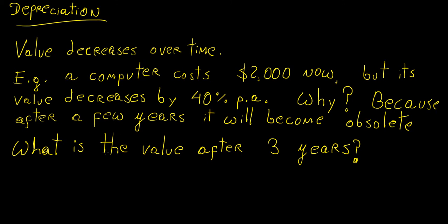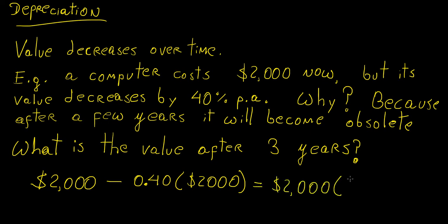So in this particular case, what would be the value after three years? So this is going to be something very similar to compound interest. But instead of adding some percentage, we're actually reducing a value by a percentage. So let's say we start off with $2,000. And then we're going to subtract 40% of the original amount. That's going to be 0.40 times 2,000. And we can pretty much write this down as 2,000 times 1 minus 0.4. So that's going to be the value after one year.